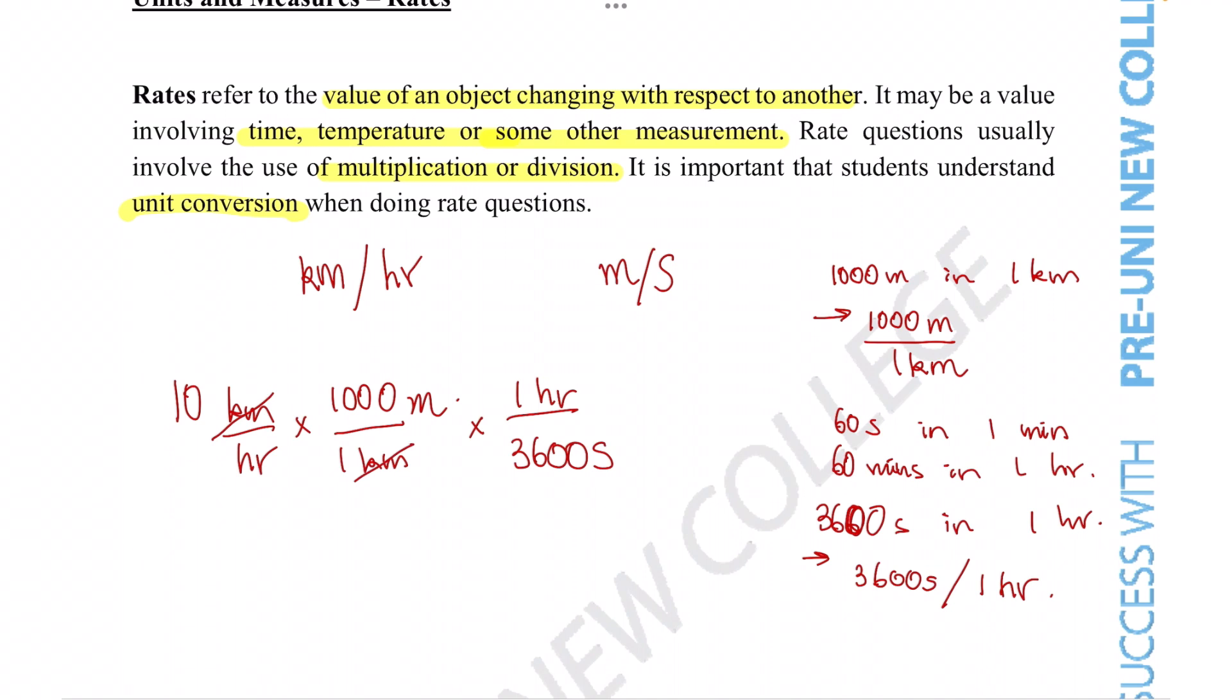The kilometers cancel out, the hours cancel out, and what units we're left with is meters per second. The calculation then becomes 10 times 1000 divided by 3600 meters per second. That's a trick you can employ to make sure that your units are in the correct format whenever you're doing these types of unit conversions.